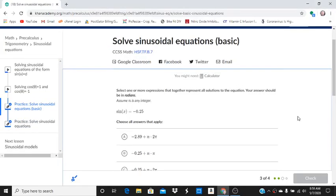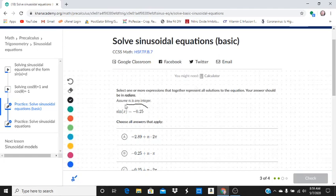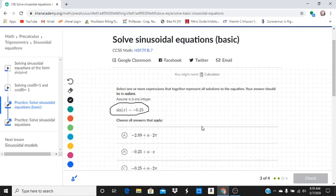Hi, Mr. Ungert here, and in today's video I'm going to look at an example from Solve Sinusoidal Equations Basic. In this first problem, we have to select one or more expressions that together represent all solutions to the equation. Our answer should be in radians. So we have, to start off with, that the sine of x equals negative 0.25.